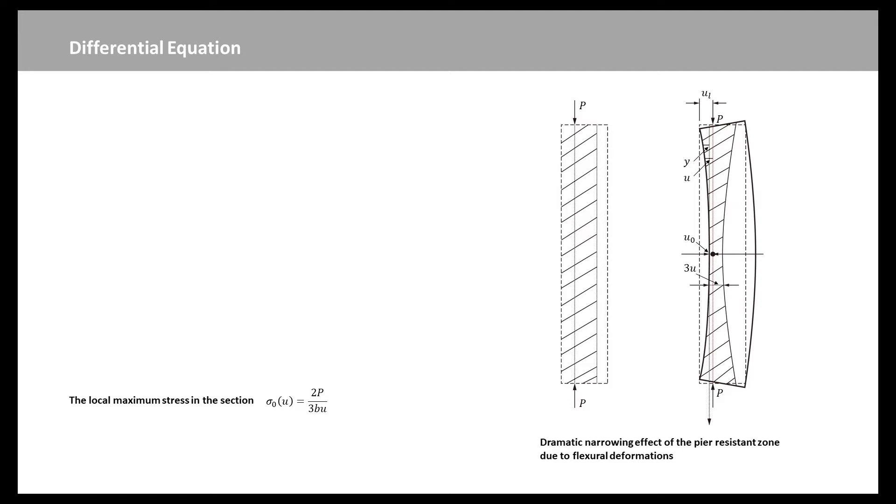In this equation, sigma OU is the local maximum stress in the section whose compressed edge is at distance U from the P-axis. The maximum compression stress of all the local maximum stresses, sigma OU, indicated by sigma maximum, occurs at the pier midsection at the distance half of H from the end sections and equals this expression.